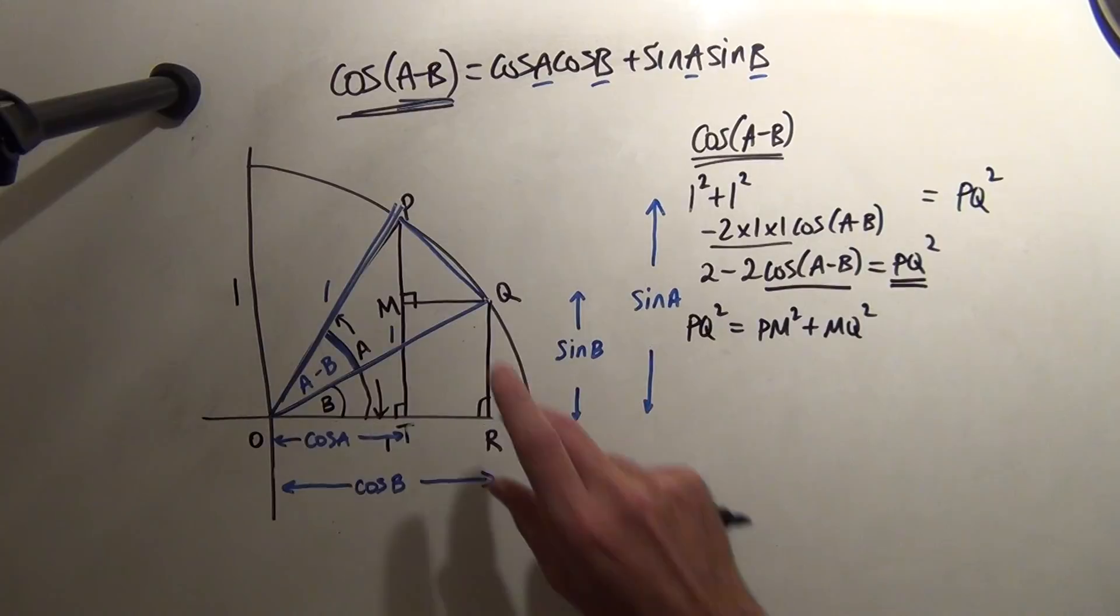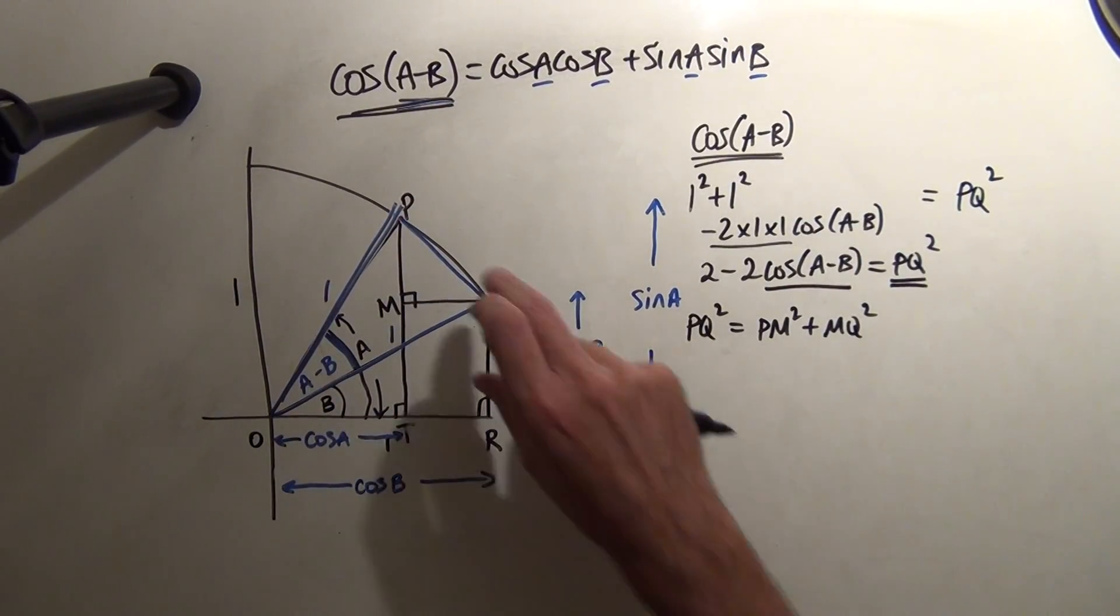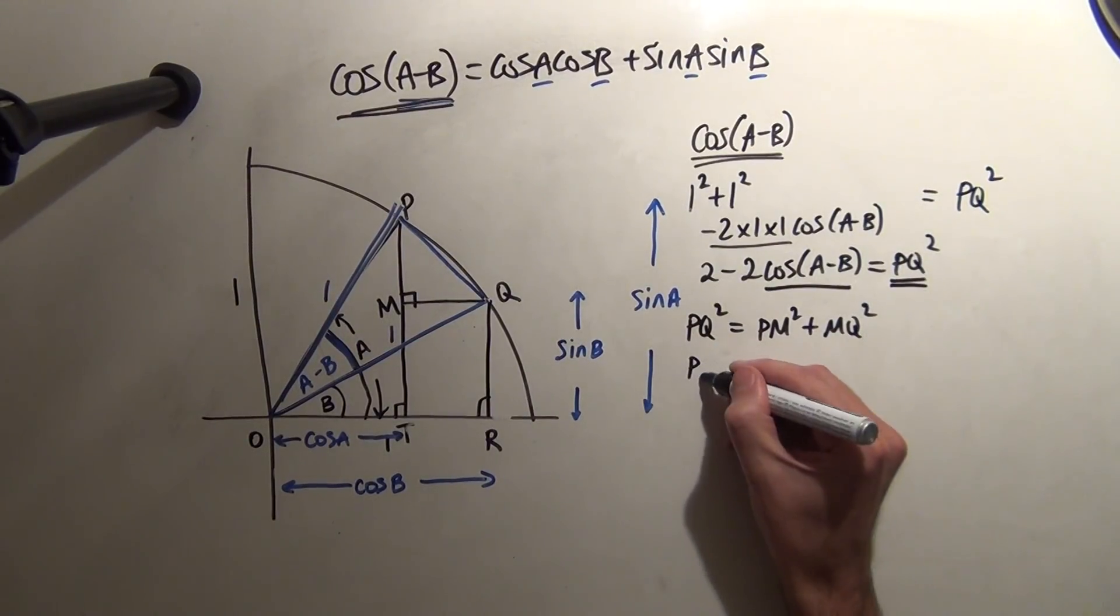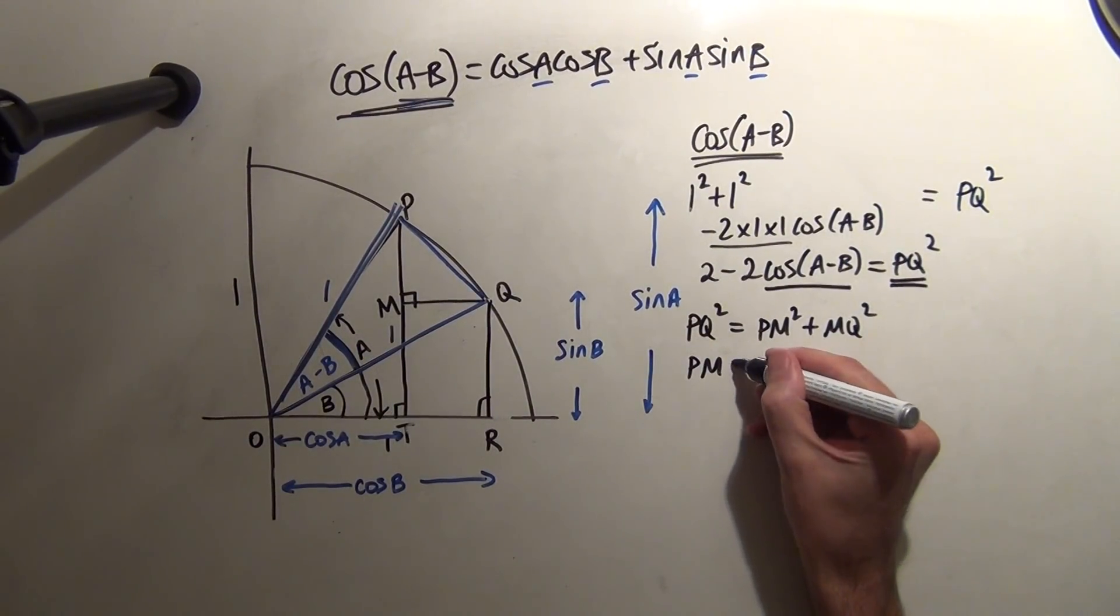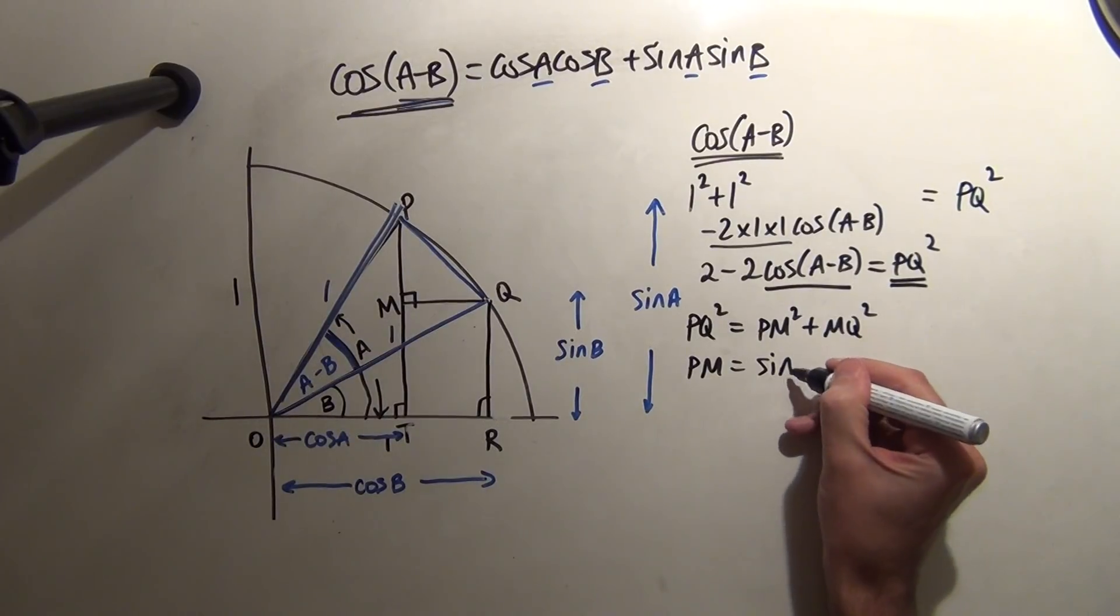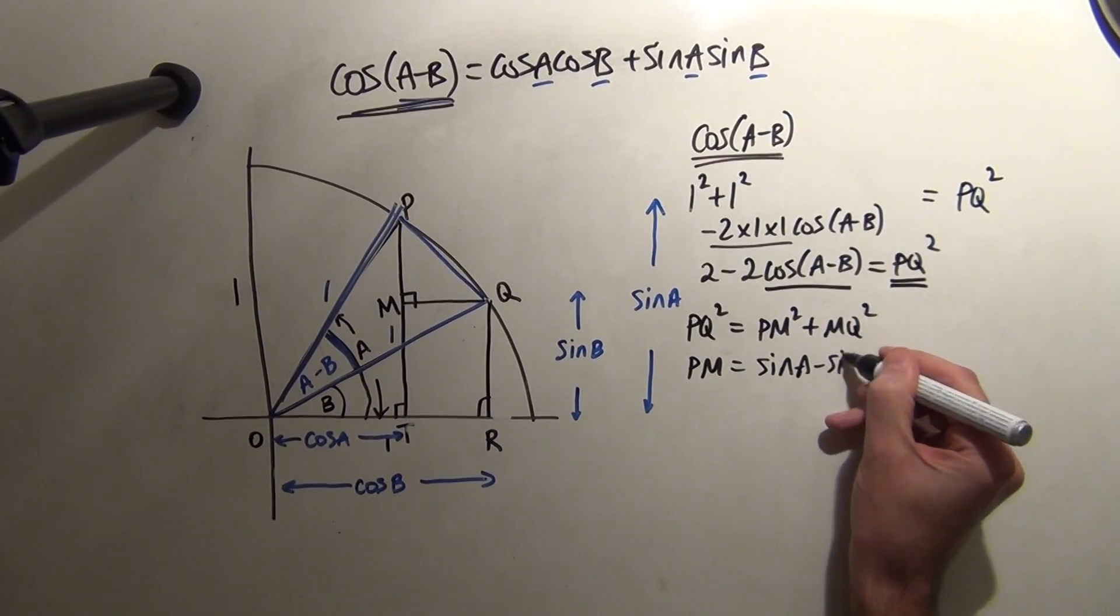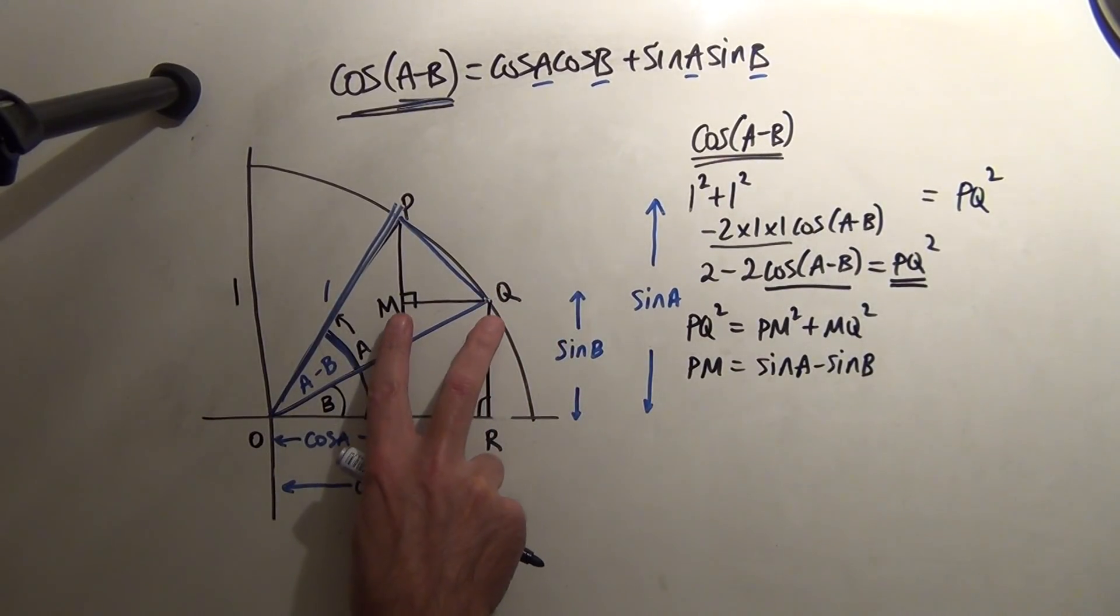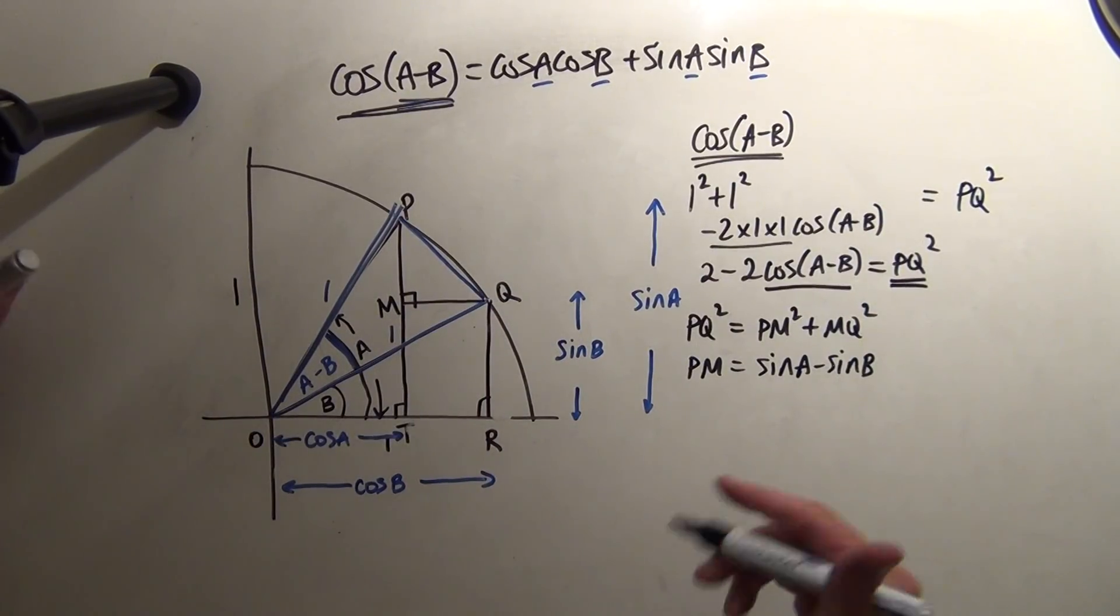So, just to recap, PM, which is one of the lengths I need, is going to be sinA - sinB. And QM, or MQ, is going to be cosB - cosA.